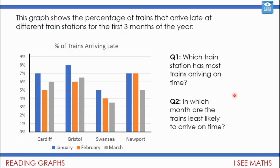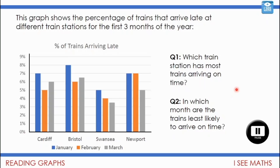Here's a similar graph showing the percentage of trains that arrive late at different stations for the first three months of the year. For every station it's under 10 percent. The blue bar shows January, orange shows February, and gray shows March — for Cardiff, Bristol, Swansea, and Newport. Question one: which train station has most trains arriving on time? Question two: in which month are the trains least likely to arrive on time? Pause the video and think.